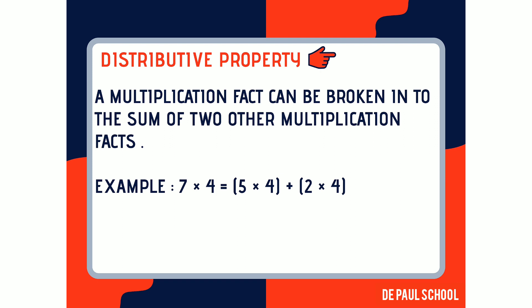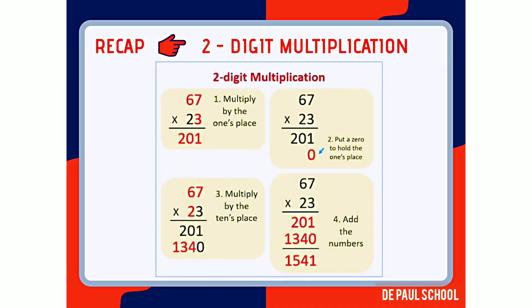The last property is the distributive property. A multiplication fact can be broken into the sum of two other multiplication facts. For example, 7 multiplied by 4 equals 28. You can get the same answer of 28 when 5 is multiplied by 4 and then added to 2 multiplied by 4.